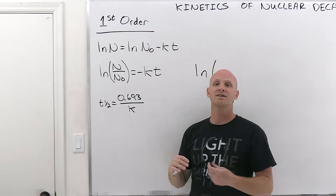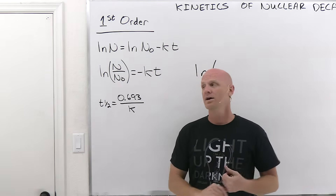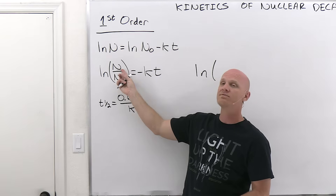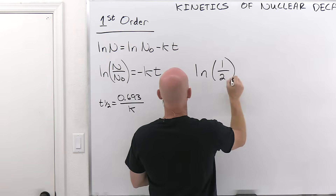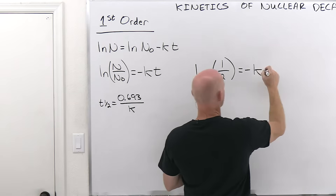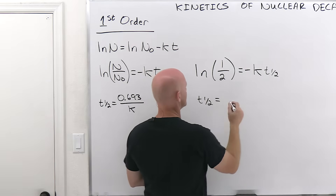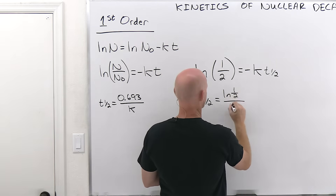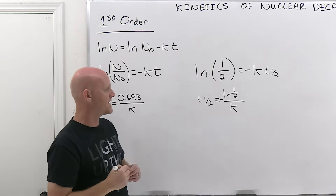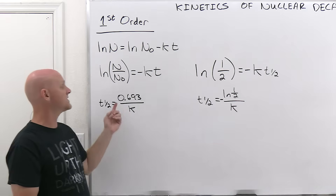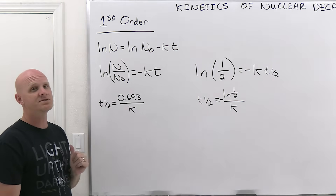The half-life is defined as the time it takes for half your sample to decay away. If you started with n-naught, you'd have half of n-naught left. Half of n-naught divided by n-naught is just one-half, so at the half-life time this becomes natural log of one-half equaling negative k times the half-life time. Rearranging, the half-life equals negative ln(1/2) over k. The natural log of one-half equals negative 0.693, so a negative times negative 0.693 gives a positive — and that's where this relationship comes from.